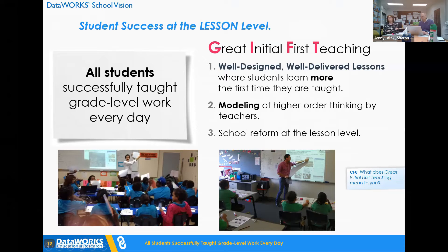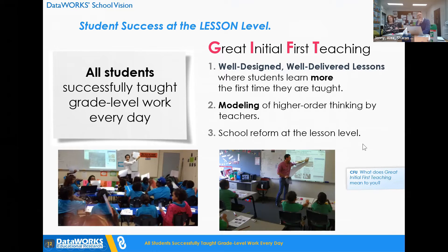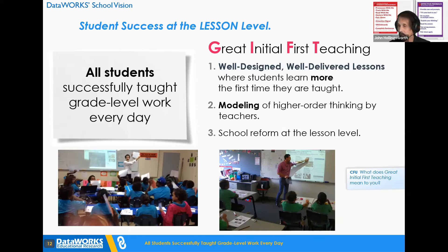Number two: teachers should be doing ready-to-go modeling of higher-order thinking. Number three: school reform at the lesson level — at both the delivery and the design level. Think about this: if our model for reform is optimizing initial classroom instruction, what would you be rethinking at your school right now?